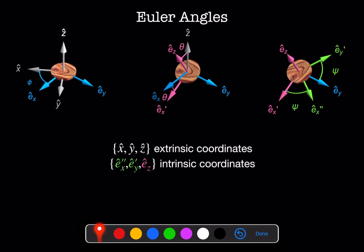X hat, Y hat, and Z hat are extrinsic coordinates, so these are coordinates in the lab frame. This new coordinate system, E_x double prime, E_y prime, and E_z are intrinsic coordinates, which means that these are coordinates in the body frame.